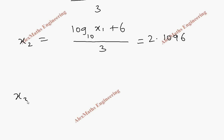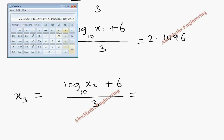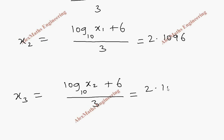Coming to x₃, which is log of x₂ base 10 plus 6, whole divided by 3. Using 2.1096, log of that value plus 6 divided by 3 gives 2.10806. When we round up, it becomes x₃ equals 2.1081.